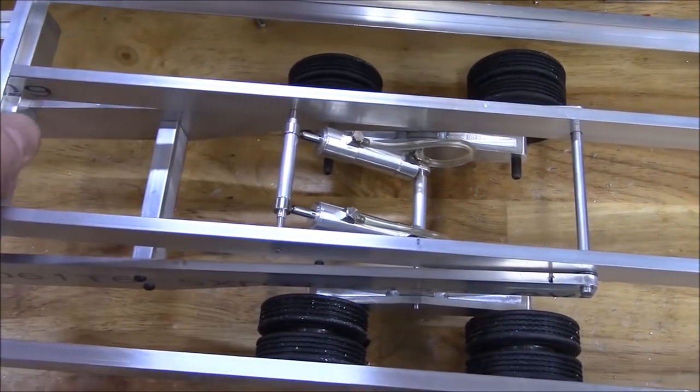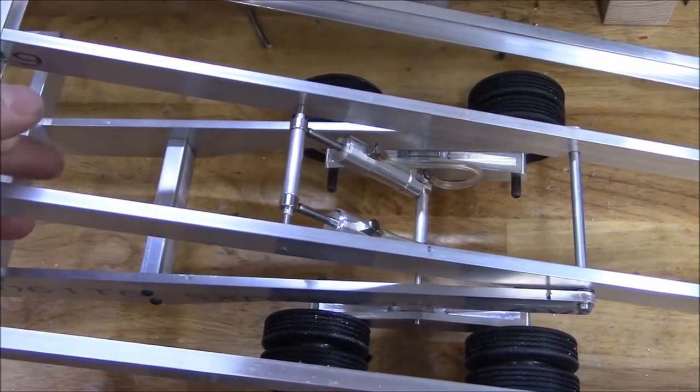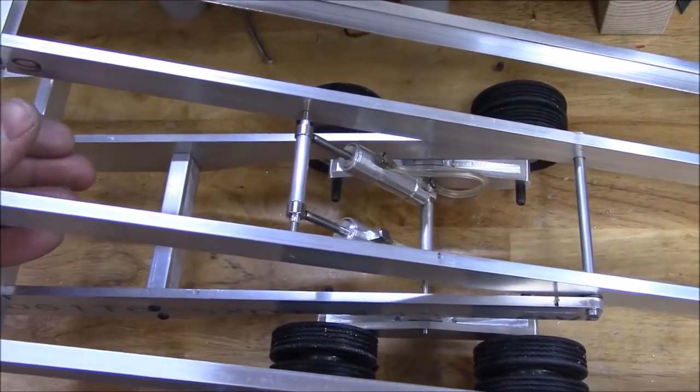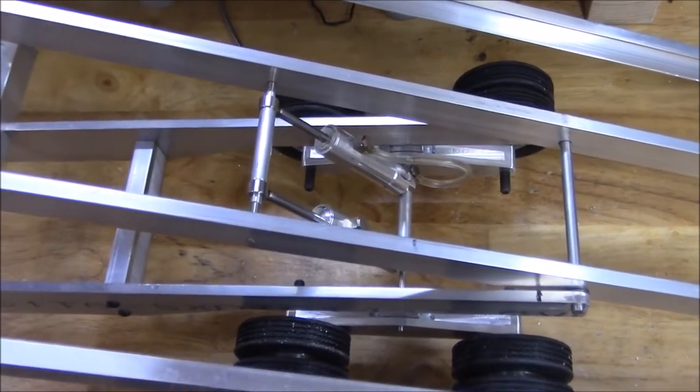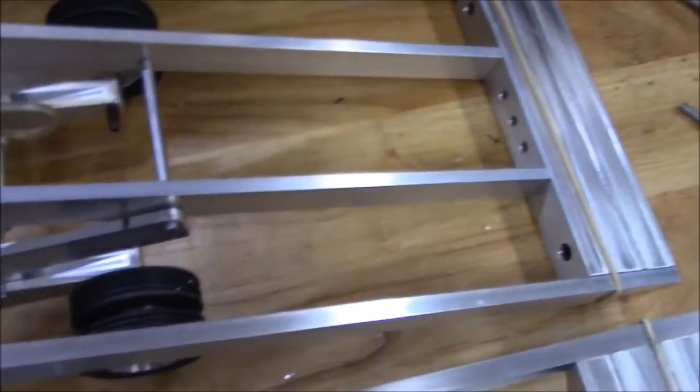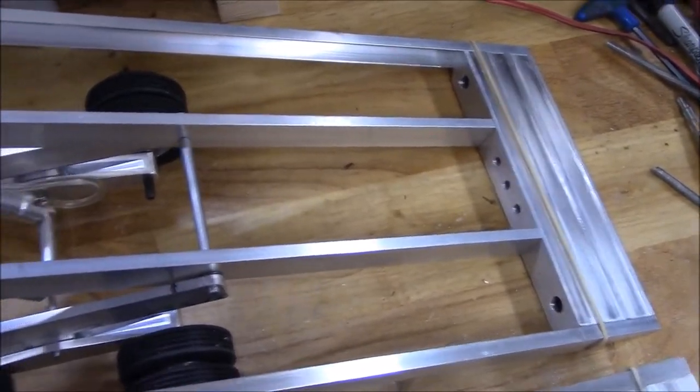So I've got them installed in there this way. This was about the easiest way I could do it. The travel's a bit short on them, so by mounting them this far back I was able to get it so the tail of the trailer drops about a half inch below ground level just in case.